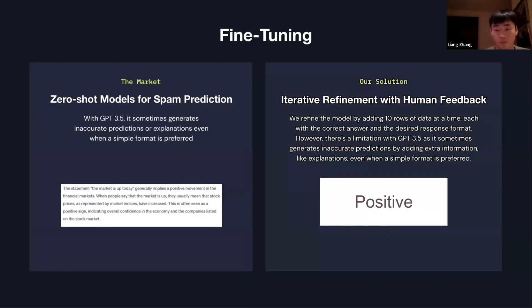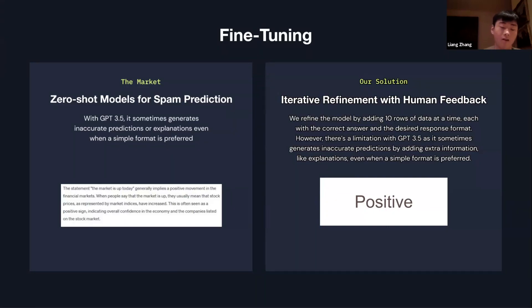A second solution for these low-accuracy zero-shot models is fine-tuning the model through human feedback. If you call the API for ChatGPT, for example, and ask whether 'the market is up today' is positive, negative, or neutral, it often answers with an additional explanation. That makes it extremely hard for data scientists to calculate accuracy. A solution is to fine-tune the model on 10 rows of data with corresponding answers in the desired format — iteratively, over time, the model's accuracy will improve.